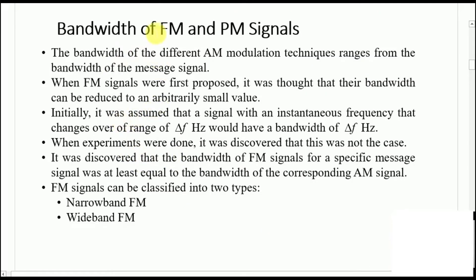Let's start the discussion of the bandwidth of FM and PM signals. The bandwidth of different AM modulation techniques ranges from the bandwidth of the message signal. For SSB, if the message signal has a bandwidth of 1B, the modulated signal would also have a bandwidth of 1B. For VSB, depending on the filter characteristics, the bandwidth would be around 1.25B, and for standard AM it would be 2B.